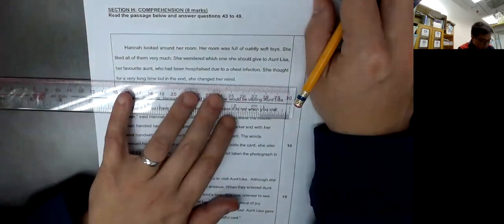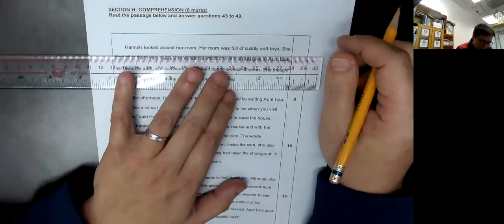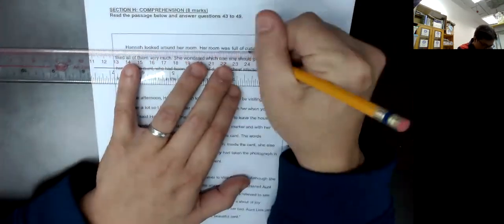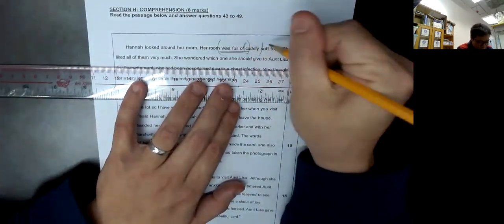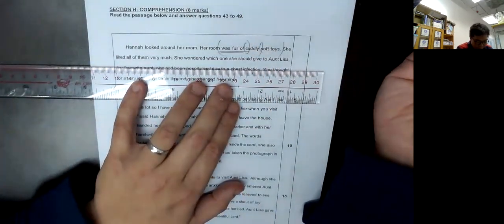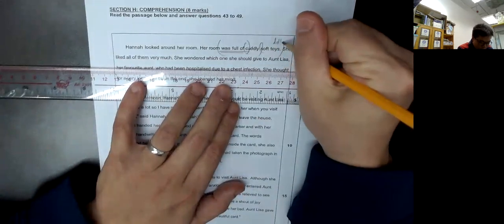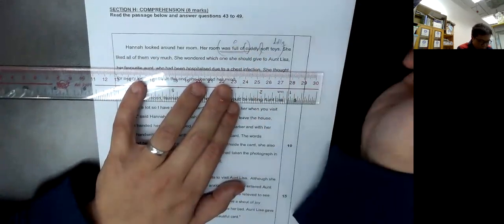Hannah looked around her room. Her room was full of cuddly soft toys. Be full of, 充滿. Be full of, 充滿些 cuddly, 無謀的玩具. Doors 還 doors, toys 還 toys, be full of.